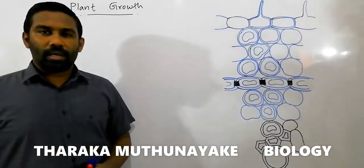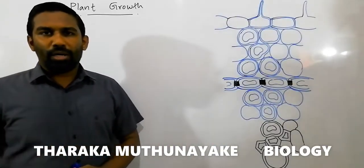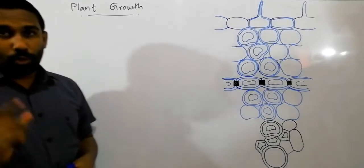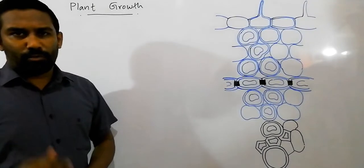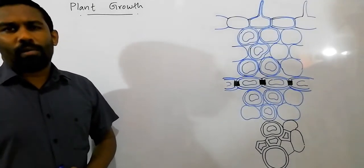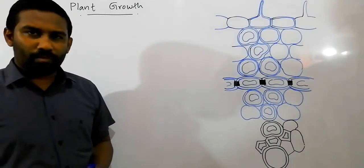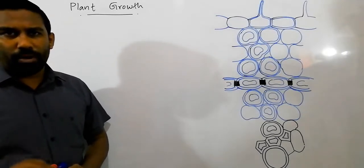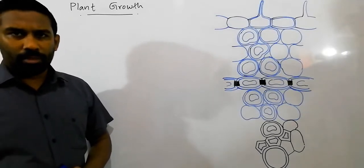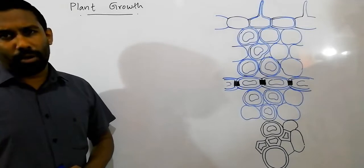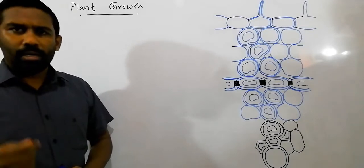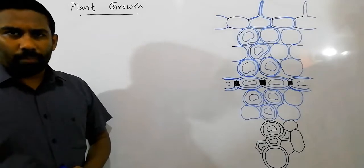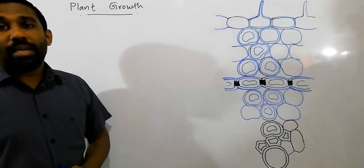Last day we discussed plant tissues. Now we are moving to the new section: plant growth. Growth is an irreversible increase of dry mass of an organism which is associated with its development.